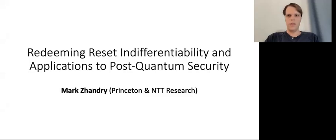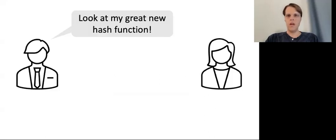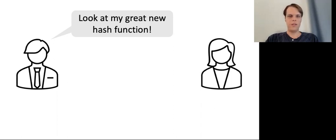Today I'll be talking about new results about reset indifferentiability. To motivate things, consider the following. Bob goes to Alice saying, look at my great new hash function. Alice is skeptical, as any cryptographer would be. She therefore asked Bob to prove security under a widely believed mathematical assumption, the gold standard of modern cryptography.